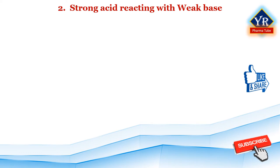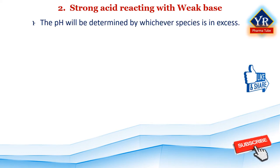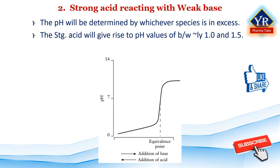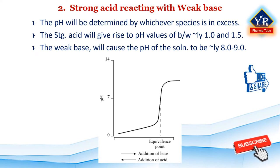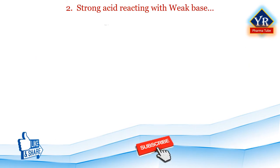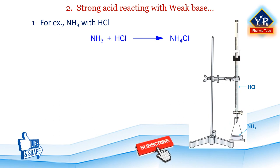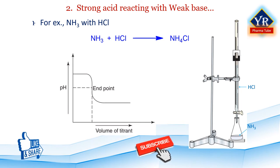Strong acid reacting with weak base: the pH will again be determined by whichever species is in excess. The strong acid will give rise to pH values of between approximately 1.0 and 1.5, while the weak base will cause the pH of the solution typically to be approximately between 8 and 9. The equivalence point may again be identified by a rapid change in pH. For example, in a titration between hydrochloric acid and the weak base ammonia, the weak base is taken into a conical flask with a small quantity of indicator and titrated with the strong acid. The plot of pH versus volume of titrant shows an initial decrease in pH, and at the endpoint a rapid pH drop, remaining constant thereafter, indicating completion of neutralization by formation of the salt ammonium chloride.